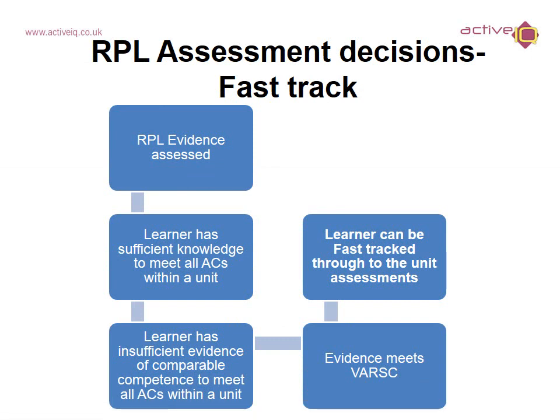Here is an illustration of RPL assessment decisions where the learner can be fast-tracked. The RPL evidence is assessed and the learner has sufficient knowledge to meet all assessment criteria within a unit, but the learner has insufficient evidence of comparable competence to meet all assessment criteria within a unit. The evidence still meets VARC, so the learner can be fast-tracked through the unit assessments, because they've shown sufficient knowledge but insufficient competence — they could be fast-tracked straight to the assessment without completing the learning.